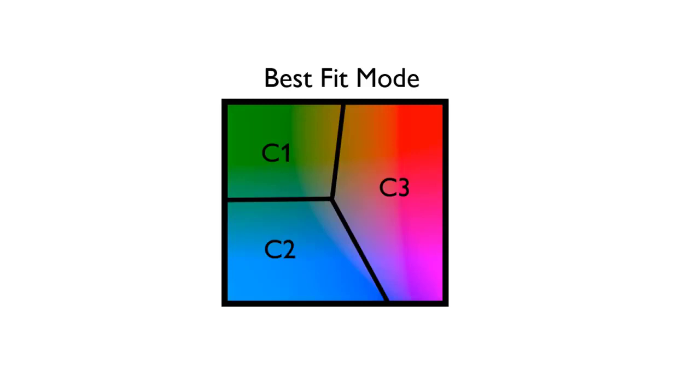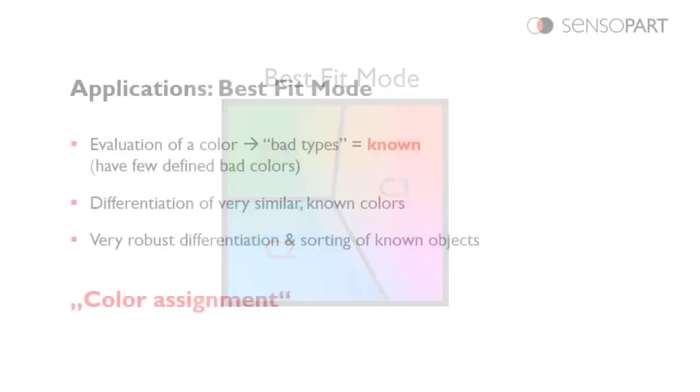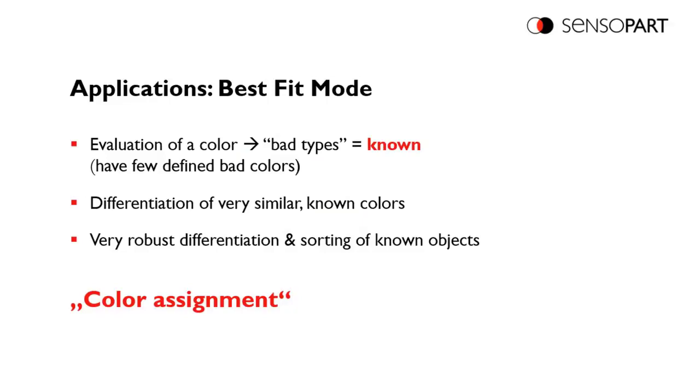Here again we have the color space. You can see with three taught colors, if each taught color is in the middle of the C, anything within this space, for example in the upper left corner around C1, any of those colors, including part of the yellow, will be classified as color one.